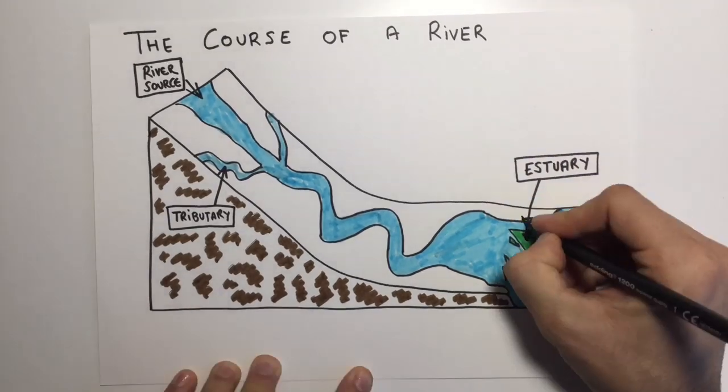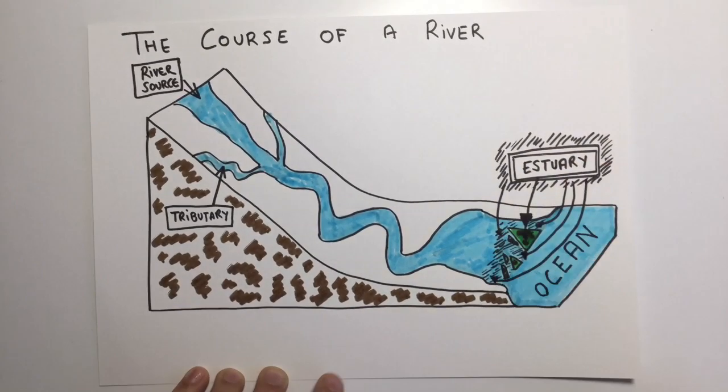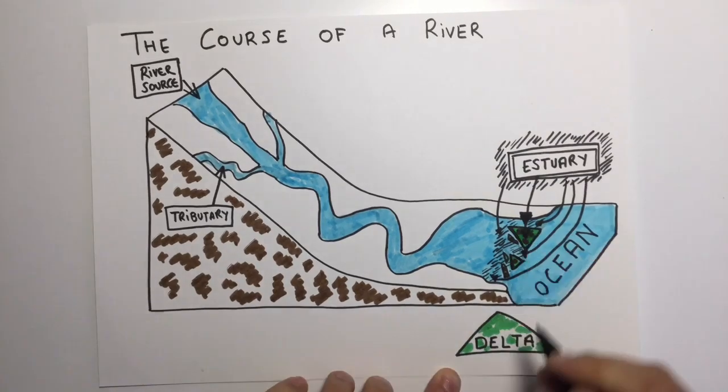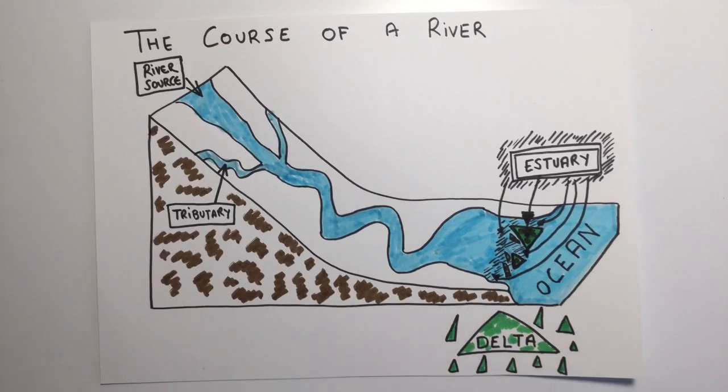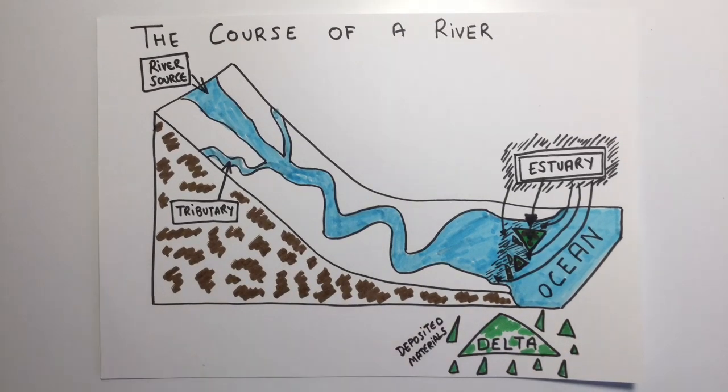There is also a place where fresh water from the river mixes with the seawater from the sea. This is called an estuary. And there are deltas — places where materials carried by the river are deposited at the mouth. These deltas normally have the shape of a triangle.